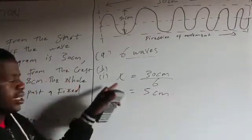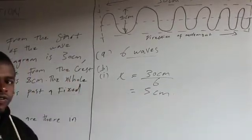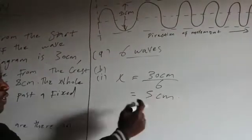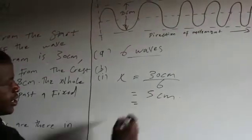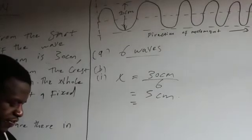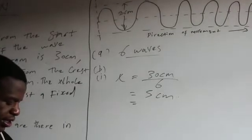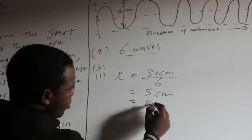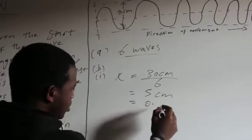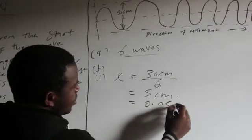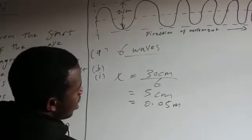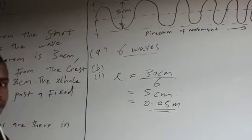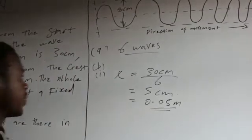Since the unit of wavelength is metres, I'm going to divide 5 by 100, giving me 0.05 metres. So this is the wavelength.